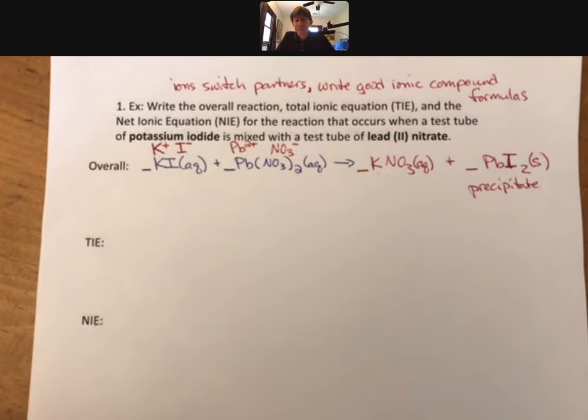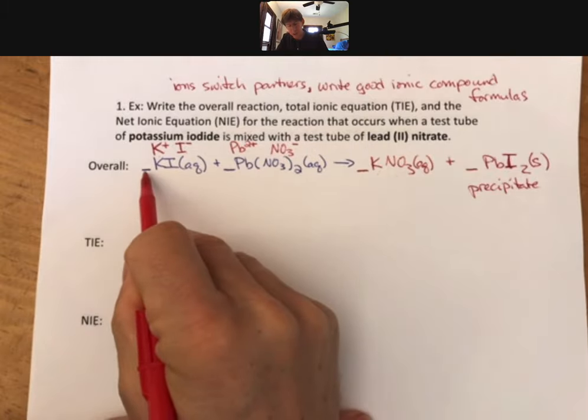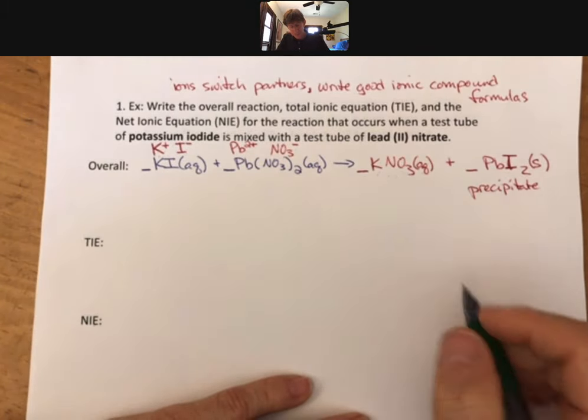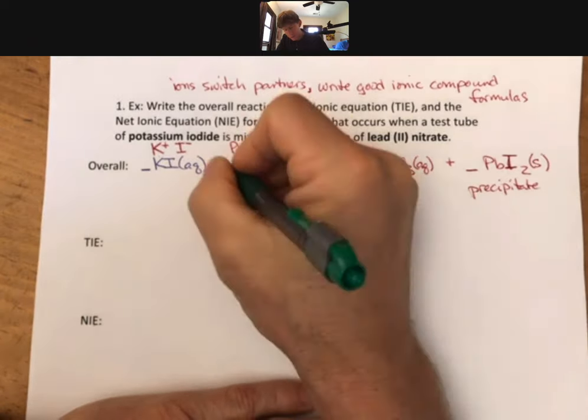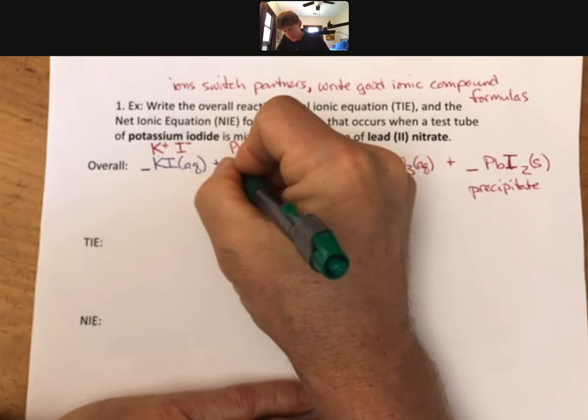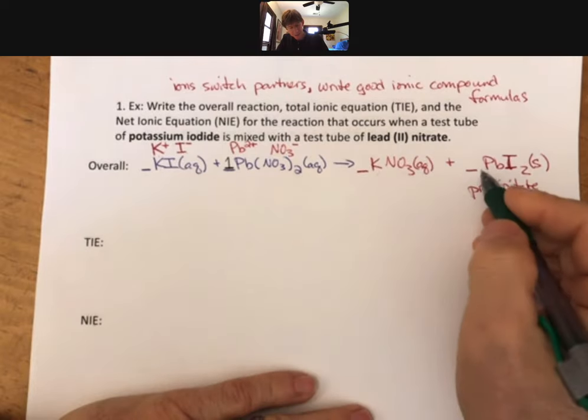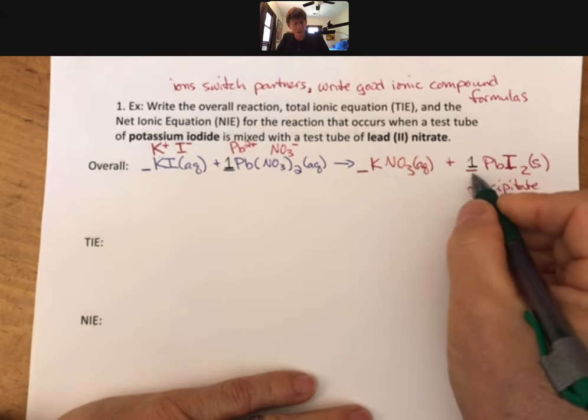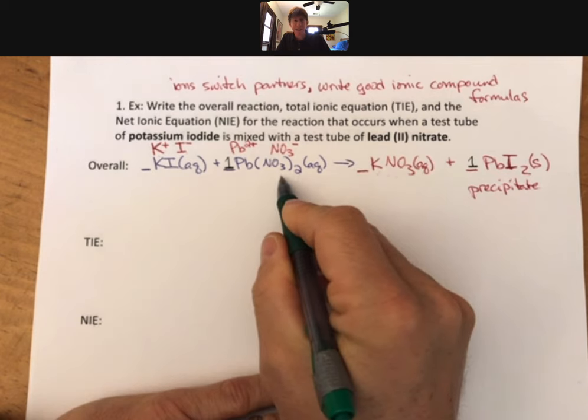And we still have to balance it because you can see we have two I's over here and one I right there. Let's see, I think this is our most complex looking thing, and I'm going to put a 1 there. And then I'm going to balance my Pb's. Since I only have one there and one on the other side, that balances my Pb's.